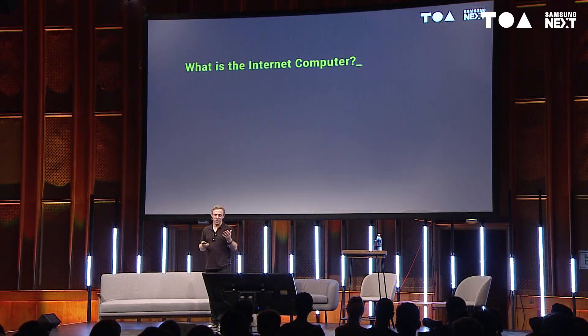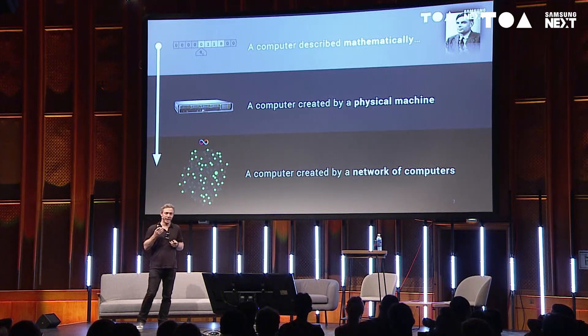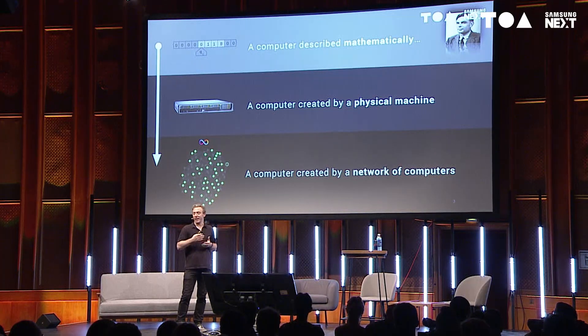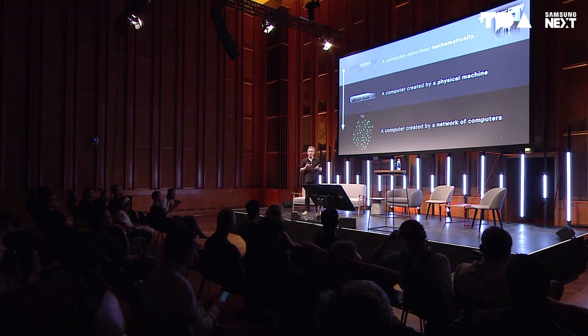The first question we're going to address is: what is the internet computer? We'll start off thinking about what a computer really is. You can define a computer mathematically. A computer in essence is essentially a virtual thing. There were people like Alan Turing and Von Neumann that created mathematical models describing how computers process instructions and data. And you can go from those theoretical models of what a computer is to a physical implementation. Most of us think about these physical implementations — either a server machine, a physical computer, or a laptop or smartphone.